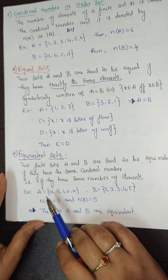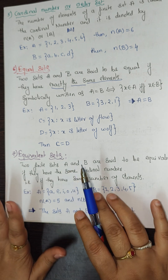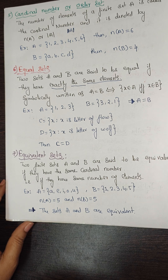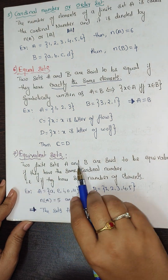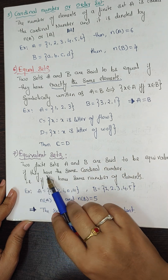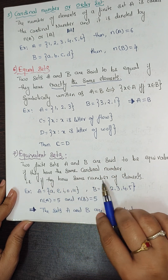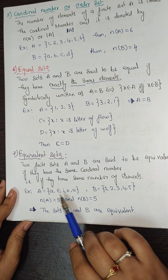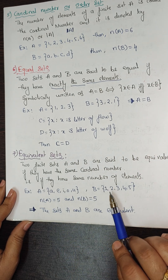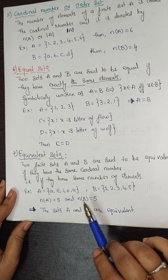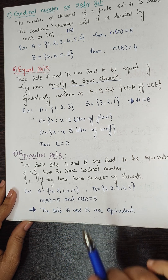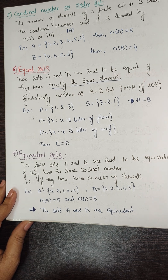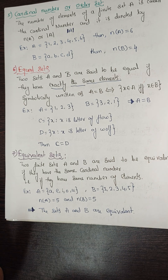Equivalent sets: two finite sets A and B are said to be equivalent if they have the same cardinal number — that is, the same number of elements. For example, A = {a, e, i, o, u} has n(A) = 5, and B = {1, 2, 3, 4, 5} has n(B) = 5. Since n(A) = n(B), sets A and B are called equivalent sets.